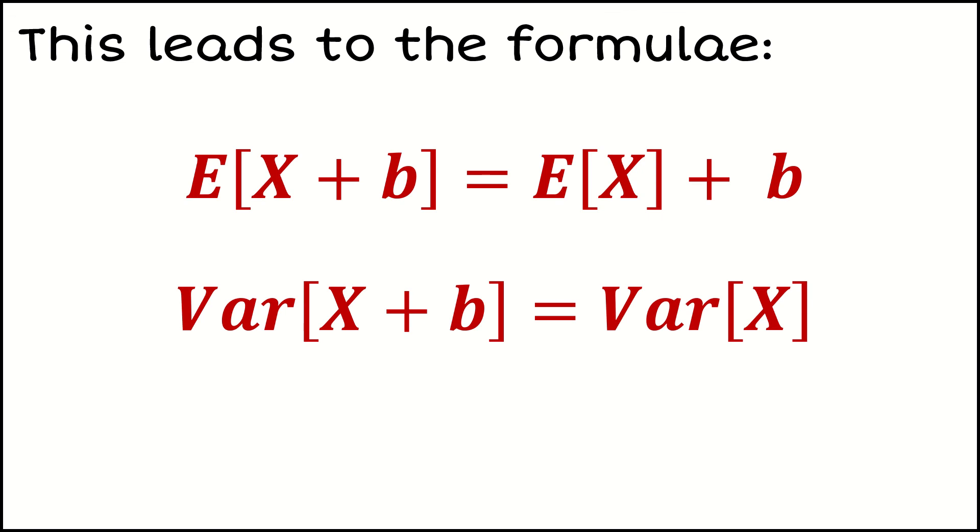So in terms of the formula, what that means is if I add a constant amount to my distribution, then I'm going to add a constant amount to the mean as well. But if I add a constant amount in the variation, that doesn't do anything to the overall variation. It doesn't change it at all because the variation, the spread of the data, is the same.